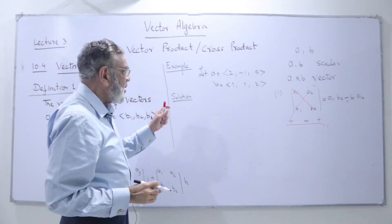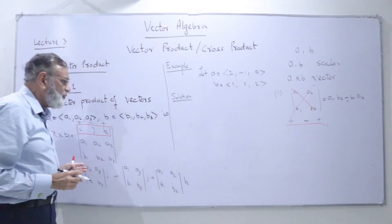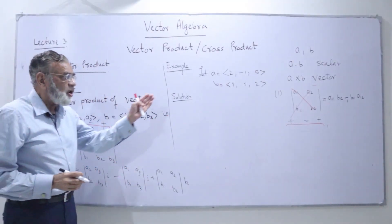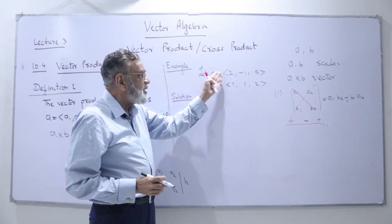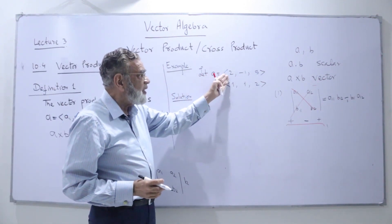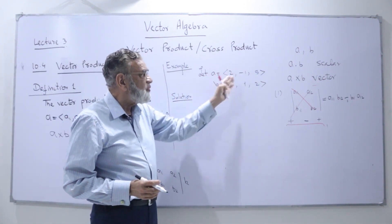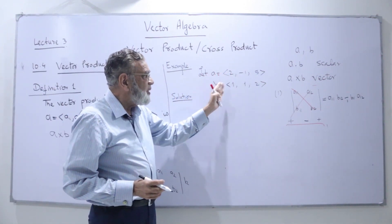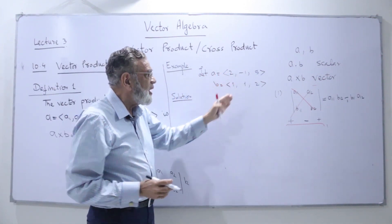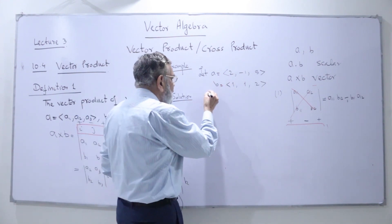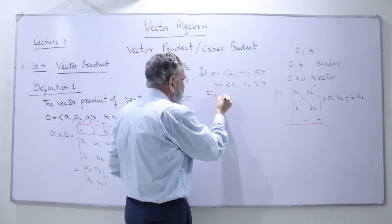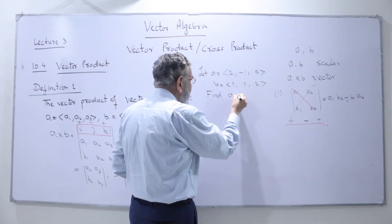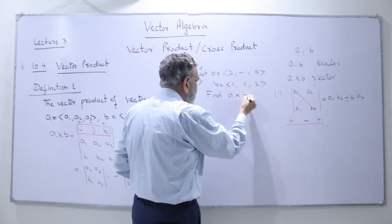I'll give you an example of how we can use this definition to find the cross product. I've given you two vectors a and b: a is (2, 1, -5) and b is (1, 1, -2). We want to find the cross product a cross b.